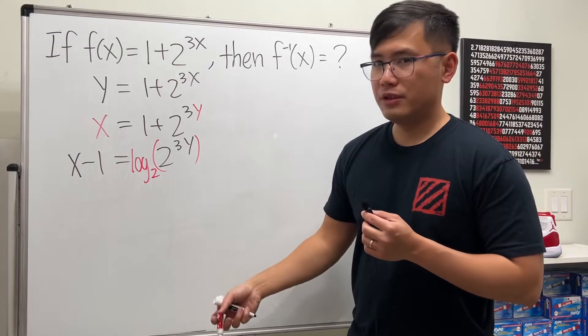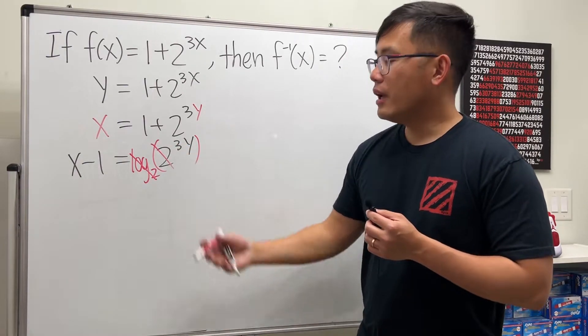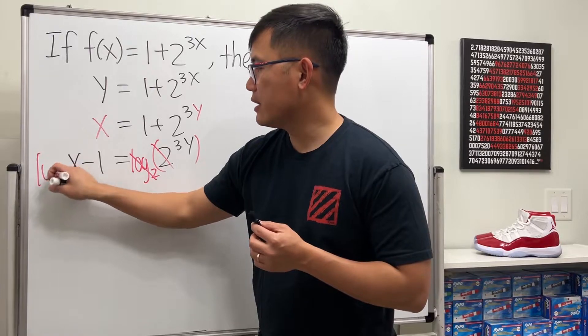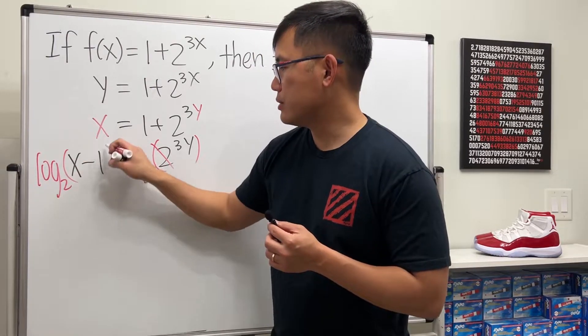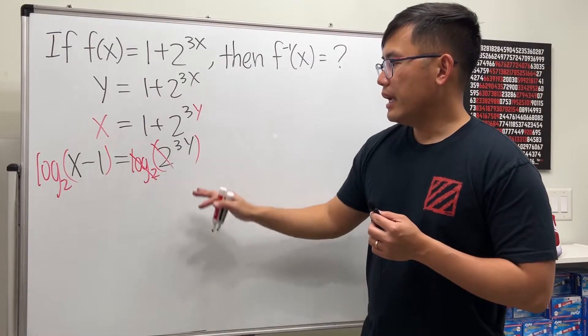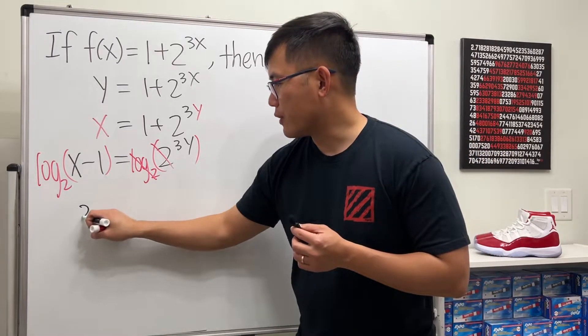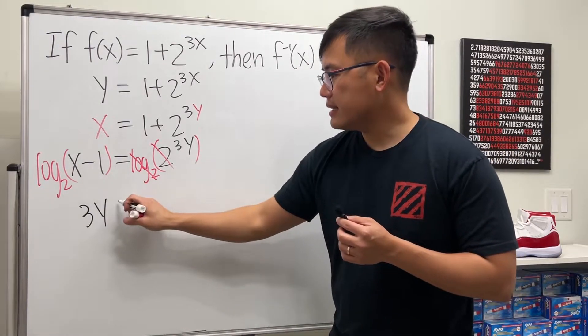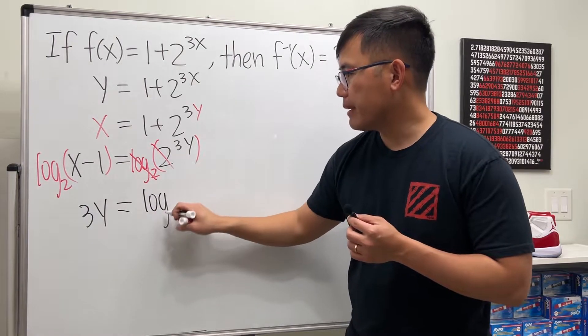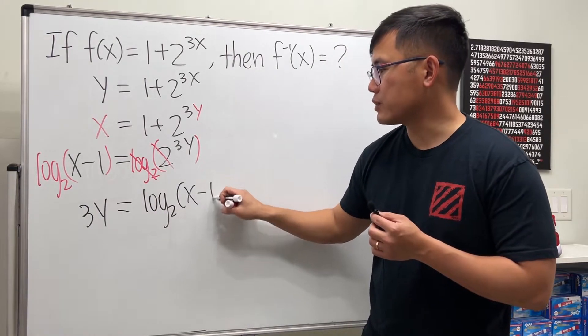Why base 2? Because this and that will cancel nicely. And of course we do the same thing on the other side, log base 2 of this. Let me write down the 3y first, and that's equal to log base 2 of x minus 1.